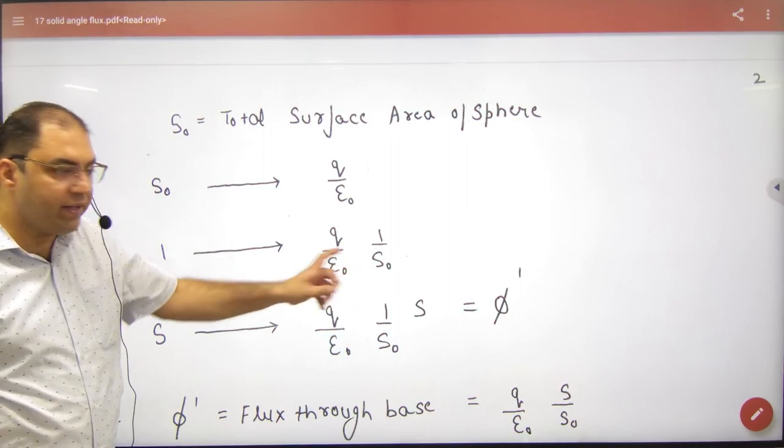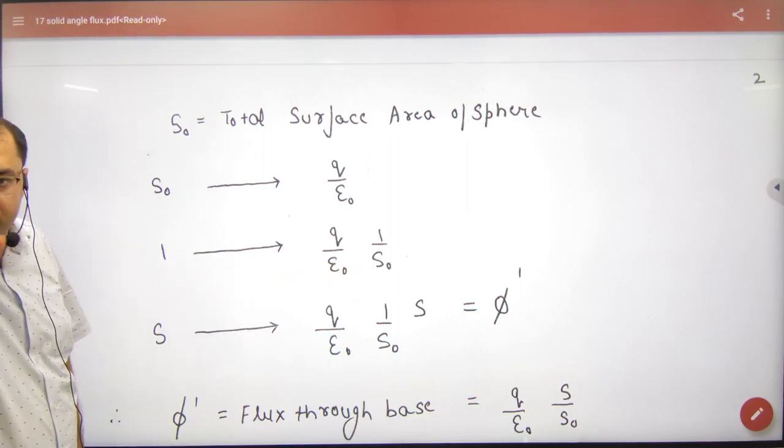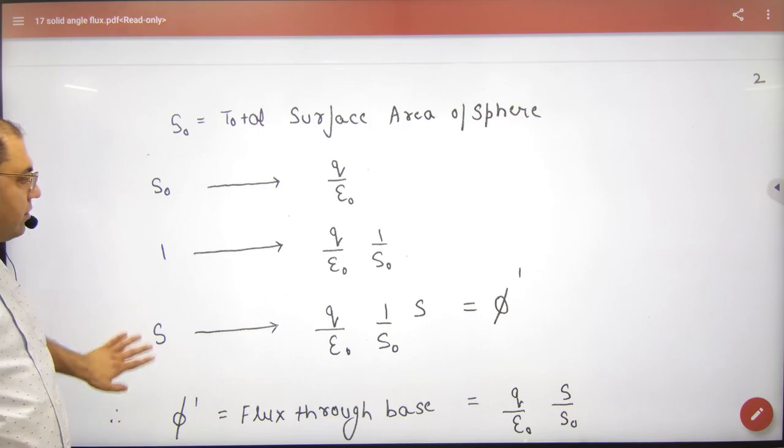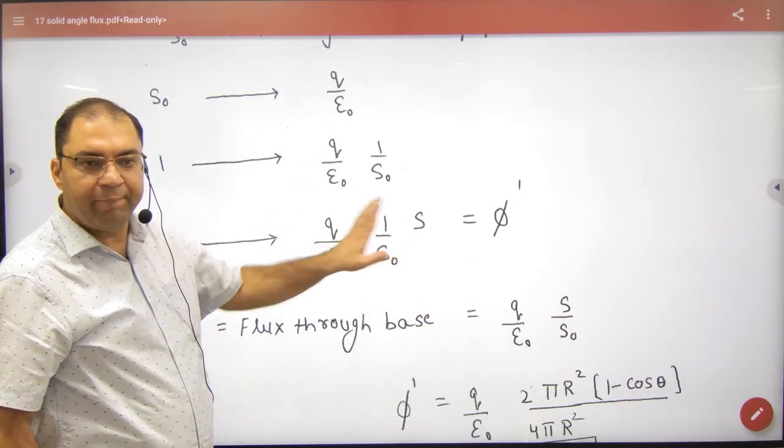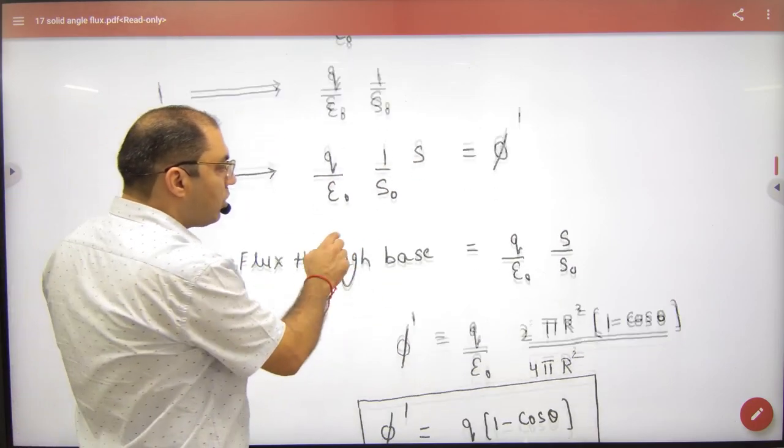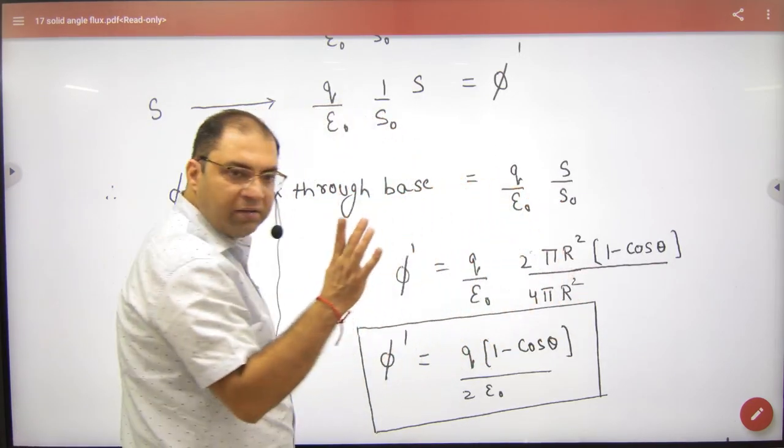By proportion, divide by S₀. For our curved portion with surface area S, the flux will be multiplied by S/S₀. We know S₀ = 4πr².